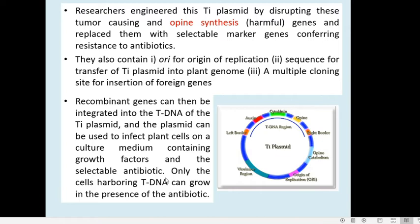We will allow Agrobacterium tumefaciens with the Ti plasmid to enter into the host cell. First we create Agrobacterium tumefaciens cells containing the modified plasmid vector. We cut the Ti plasmid with the desired restriction enzyme, insert the foreign gene, then make it enter into Agrobacterium tumefaciens cells, and select which cells have taken up this modified plasmid using the antibiotic resistance gene. Now the Agrobacterium containing the vector plasmid with the foreign DNA is ready.